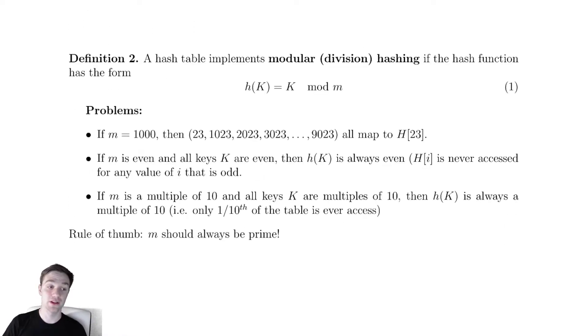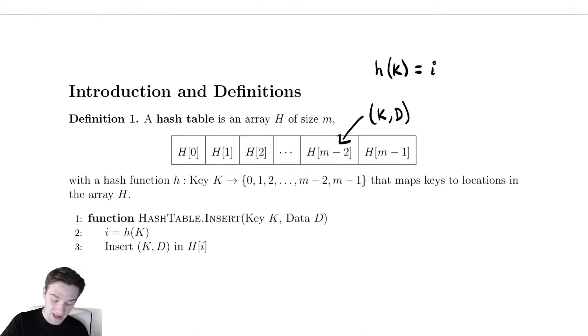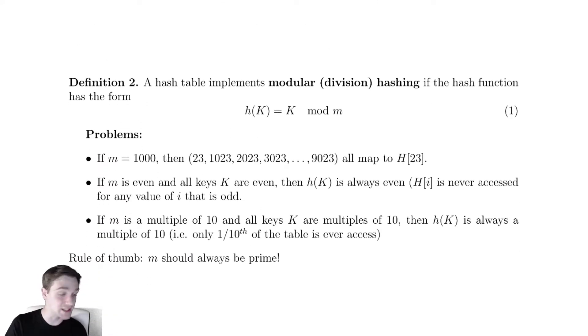Our first hash function we are going to discuss is going to be called modular or division hashing. This is a relatively straightforward implementation. If you noticed from our hash table we had up here, our values went from 0 to m-1, a very natural way to squish any integer down to that range would be to take the mod of that integer mod m. So our first implementation is going to be take the key and find its modulus mod m. Relatively straightforward.